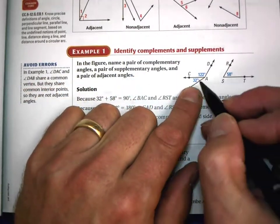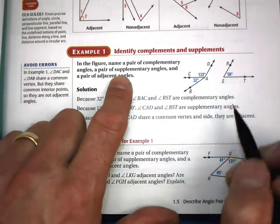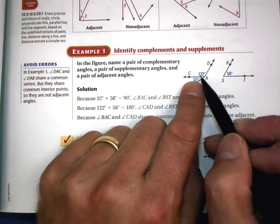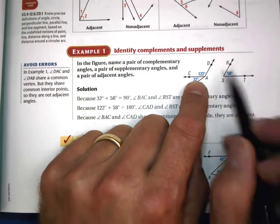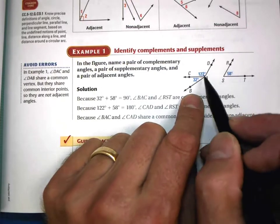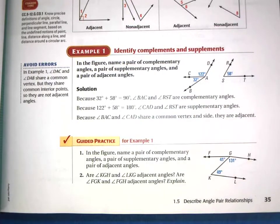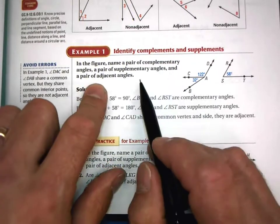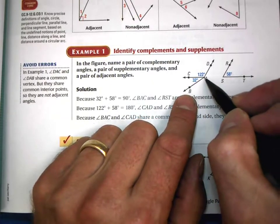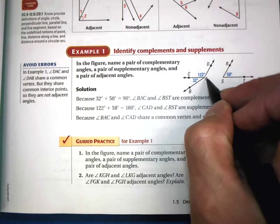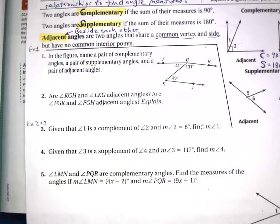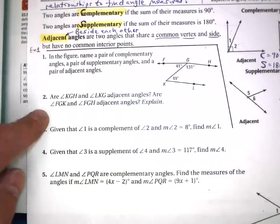We found our two angles that add up to 90 — that's complementary. For a supplementary pair, 122 plus 58 equals 180. If you put them together they make a linear pair and a straight angle. For adjacent angles, the top and bottom angles share the same vertex and a common side. Now pause the video and do problems one and two in your notes.